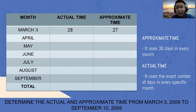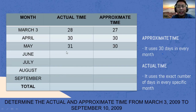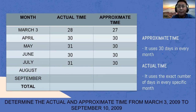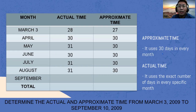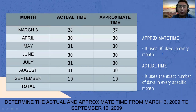For April, actual time has 30 days and approximate time uses 30 days. May has 31 days for actual time and 30 days for approximate time. June has 30 days for actual time and 30 for approximate time. For July, we have 31 days on actual time and 30 days on approximate time. On August, we have 31 days for actual time and 30 for approximate time. We will be ending on September 10, so we use 10 for both actual and approximate time.